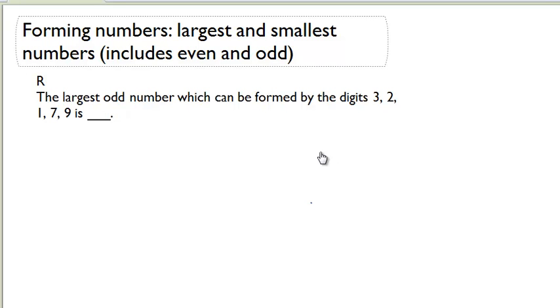Forming numbers, largest and smallest numbers, includes even and odd. Let's find the largest odd number which can be formed by the digits 3, 2, 1, 7, and 9.